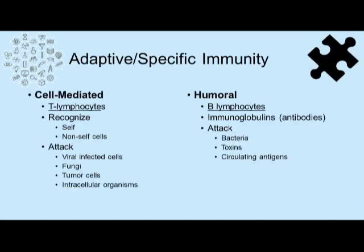We also have adaptive immunity, which is specific immunity with two components. There is cell-mediated immunity, led by T lymphocytes that recognize cells as self or non-self. If it is a good cell, it's left alone. If it's a bad cell, the T lymphocyte will attack virally infected cells, fungal elements, tumor cells, or cells infected with intracellular organisms such as chlamydia.